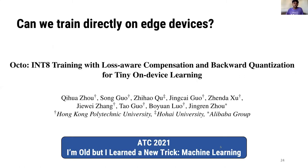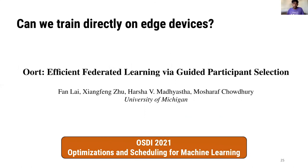Octo shows how on-device training can be feasible on tiny devices while accounting for the quantization error that comes about from using fixed-point processing with extremely low precision. Oort accelerates federated learning by determining what training data can best improve the accuracy of the trained model and which devices can most easily participate in training.